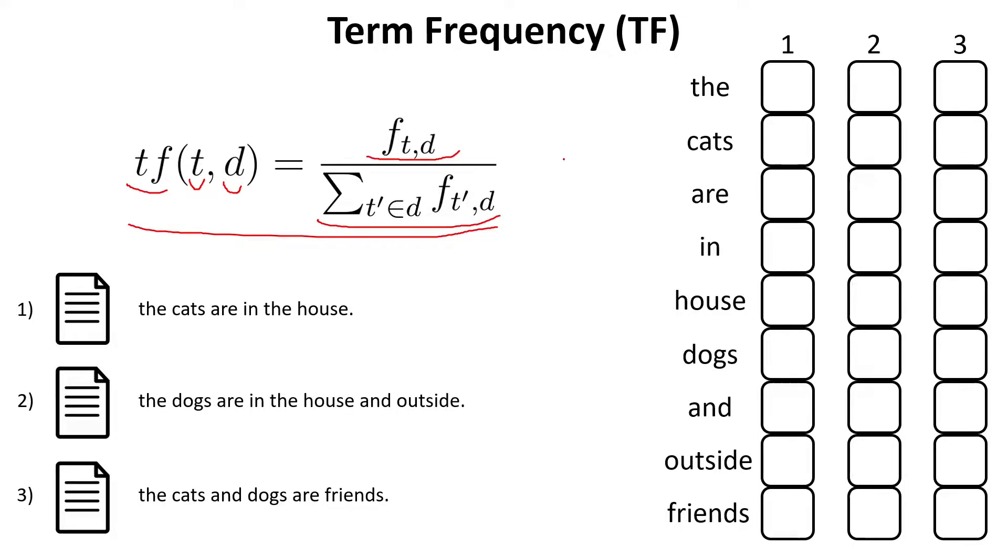And if we apply this formula, we obtain the following values for the Term Frequency of our first document. So, for instance, for the word the, it is found twice in our document, once here and once here. So, the value of the numerator is equal to 2. And we have a total of 1, 2, 3, 4, 5, 6 words in the document. So, the value of our denominator is equal to 6. And if we divide these two values, we obtain 0.333.